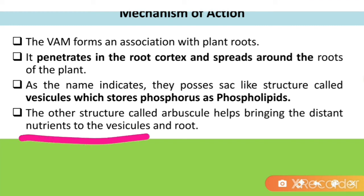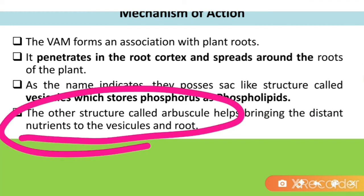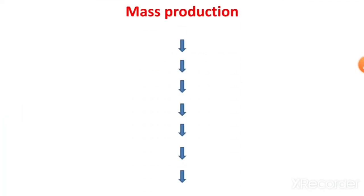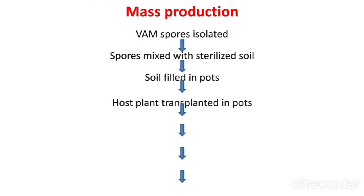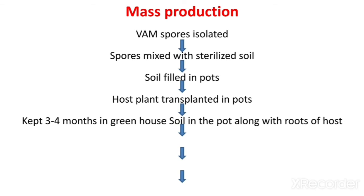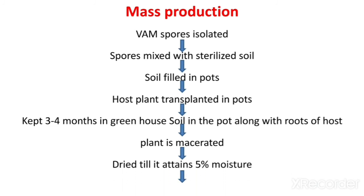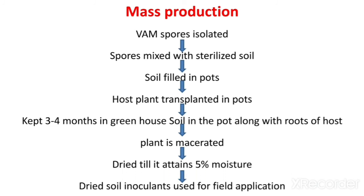For mass production of VAM as a biofertilizer: first, take VAM spores and mix them with sterilized soil, then fill the soil in pots and transplant a host plant. Keep it for three to four months in a greenhouse. The soil in the pot along with the roots of the host plant is macerated and dried until it attains five percent moisture. This dried soil inoculate is used for field application.